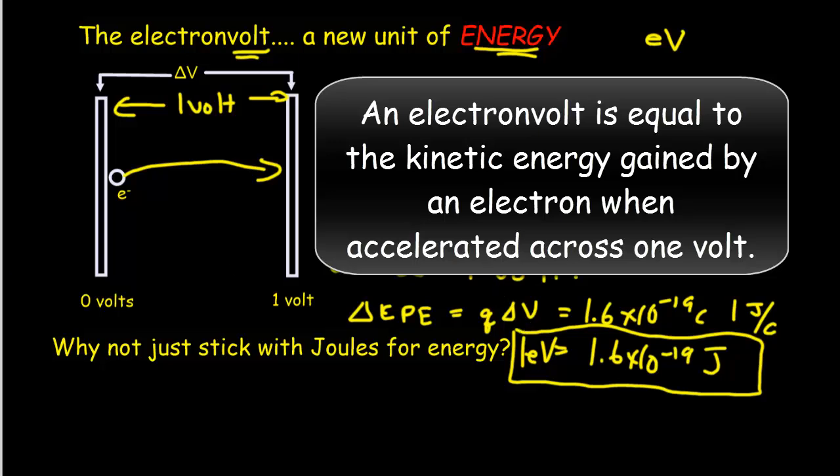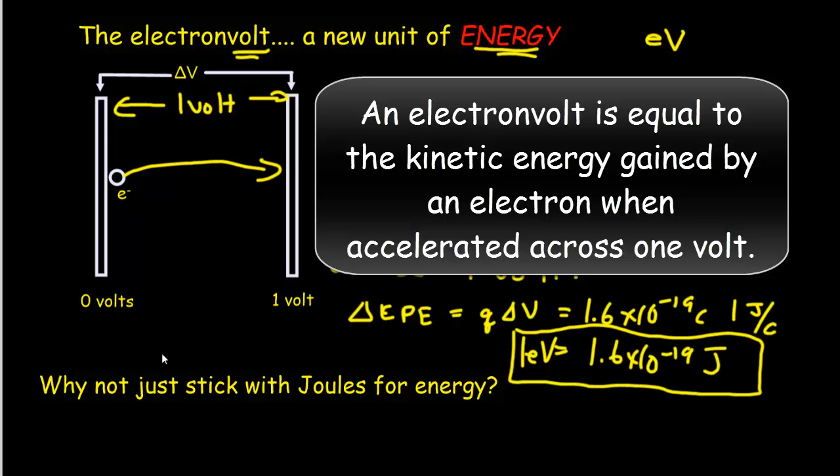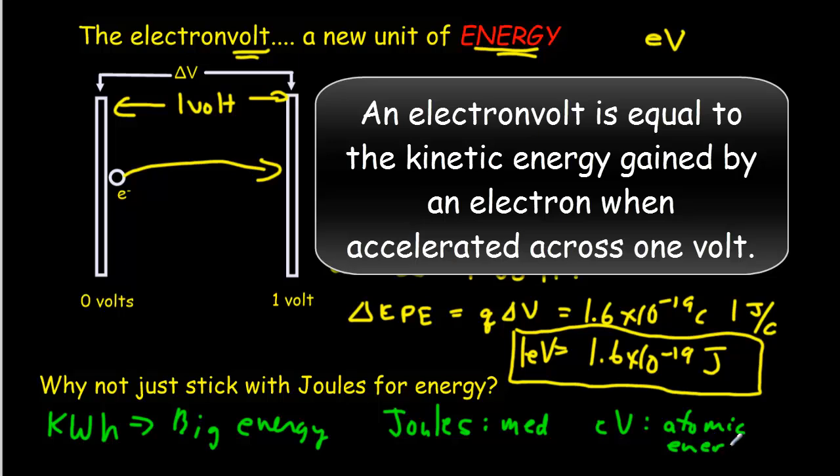Now, why do we introduce this extra complication? Why do we introduce the idea of an electron volt rather than just sticking with joules? Well, it's the same reason that we introduced the idea of kilowatt hours. Kilowatt hours are also an energy unit, and they're used for big energies. Joules are used for medium energies, and electron volts are typically used for atomic energies. It turns out atomic energies are of the order of electron volts. 1 electron volt, 10 electron volts. Those are typical atomic energies.